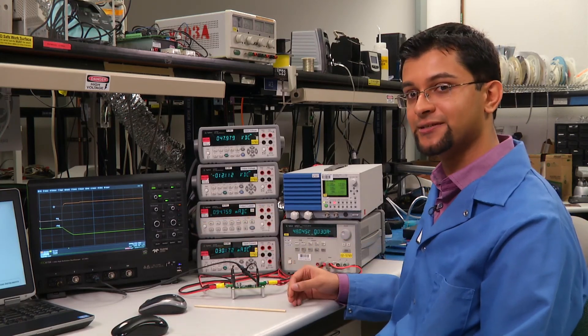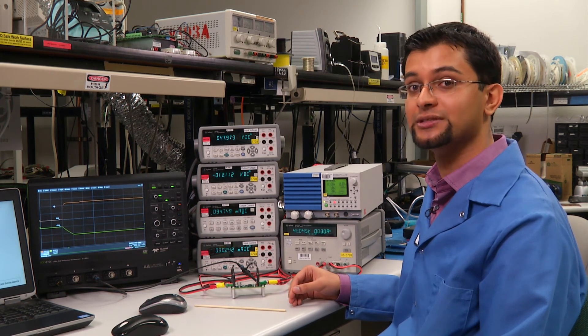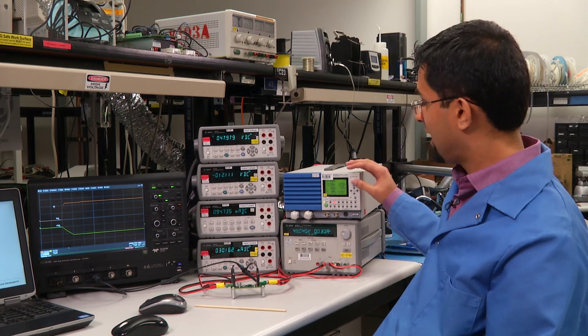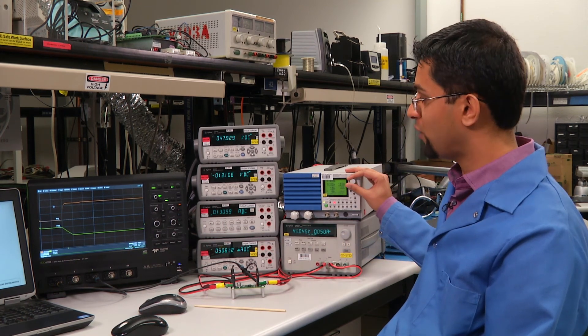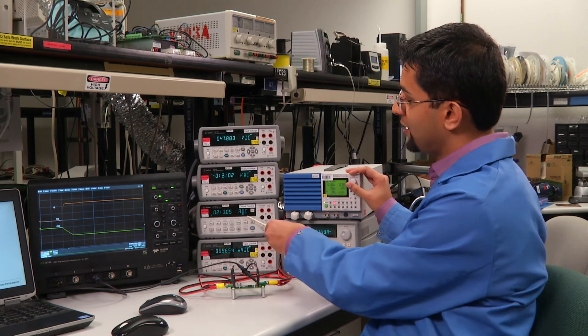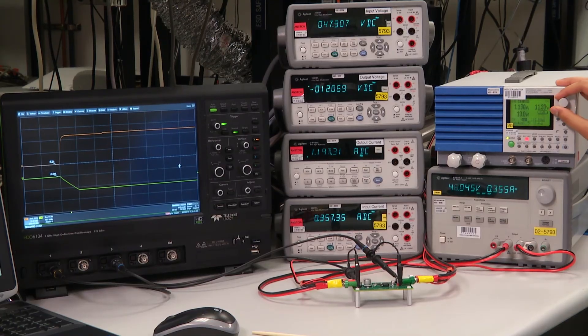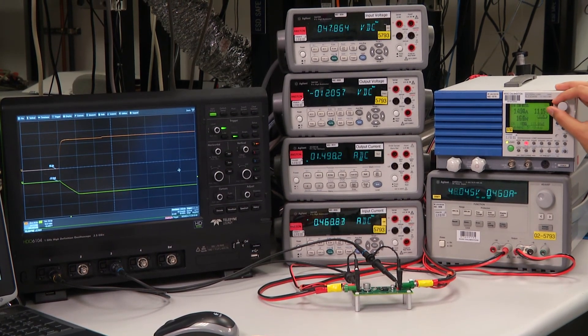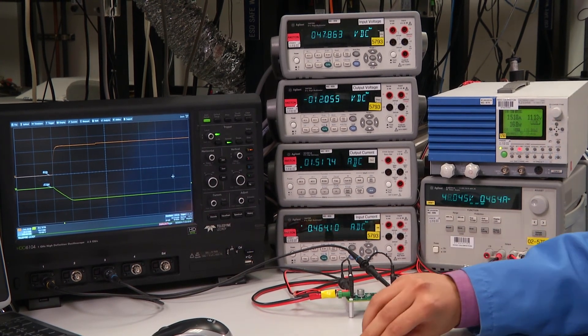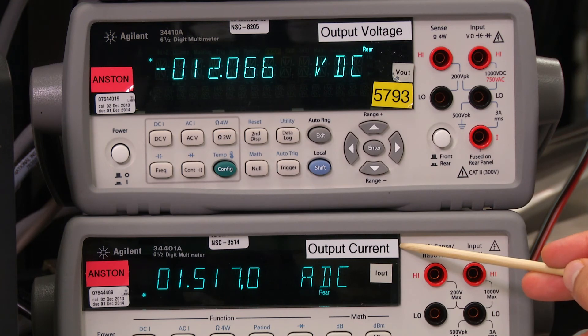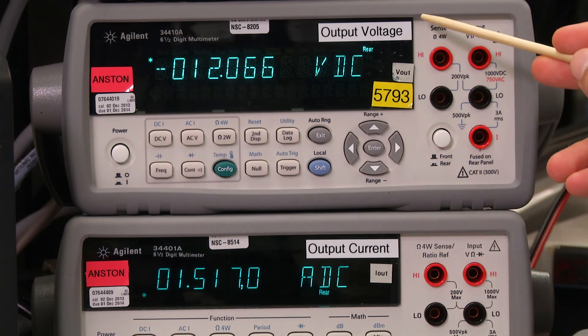Our design example specified that 1.5 amps was the maximum load current that we could achieve. So let's try that out. I'm going to increase the load to 1.5 amps, and you're going to see that climb up here on the output current. There we go. We have successfully reached 1.5 amps on the output and we are still regulating very cleanly at minus 12 volts.